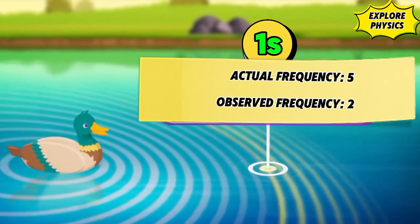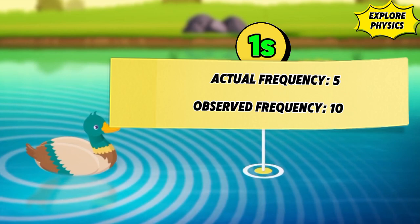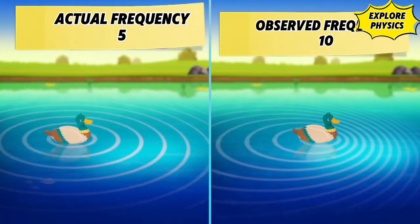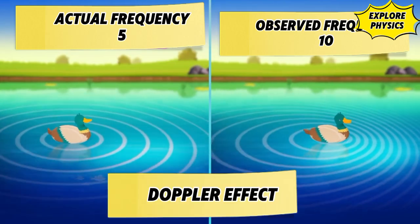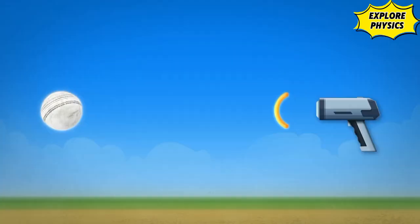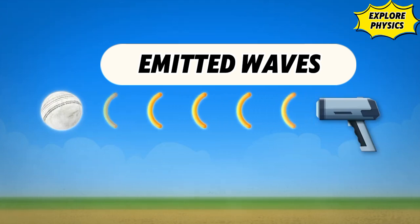This phenomenon is known in physics as the Doppler effect, and the same effect is applied by the radar gun. The microwaves produced by the radar gun have a certain frequency.